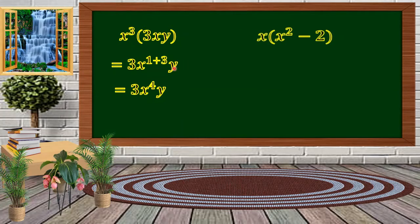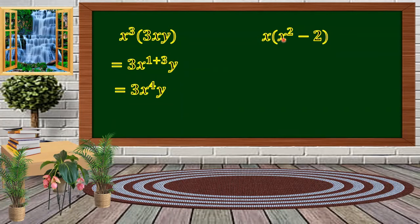Second example: we have x times the quantity x squared minus 2. In this case, we're just going to distribute the x into the binomial x squared minus 2, multiplying x into each term.